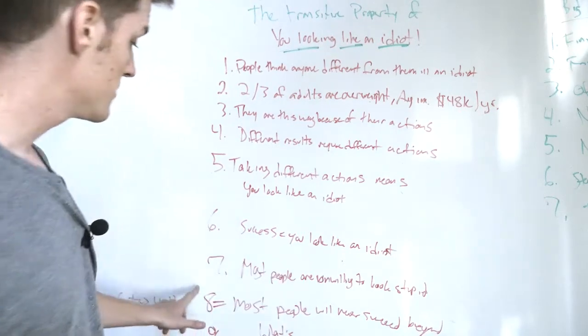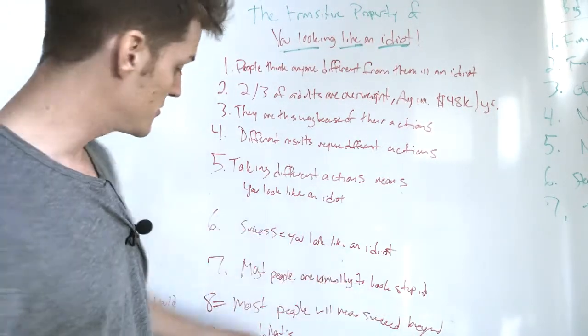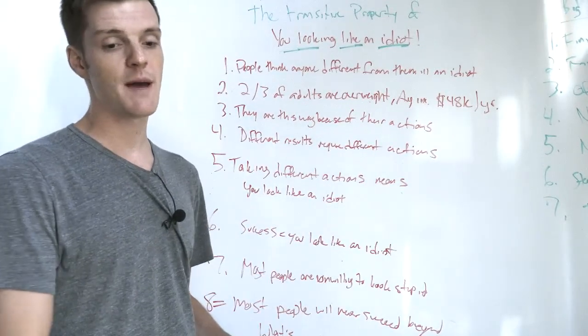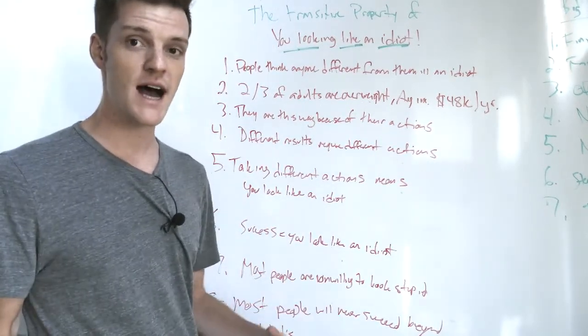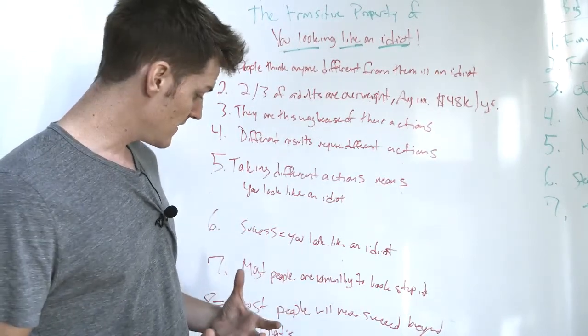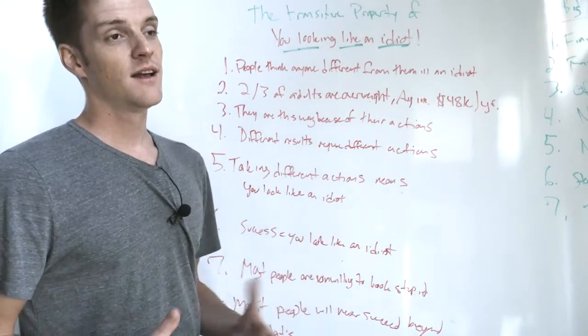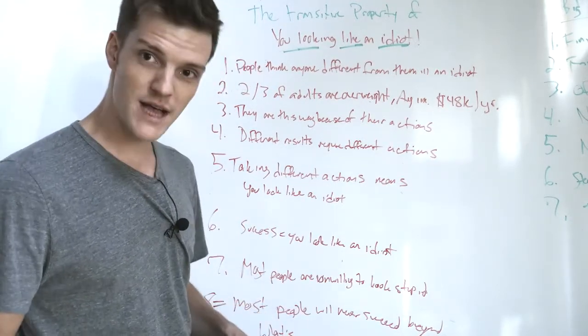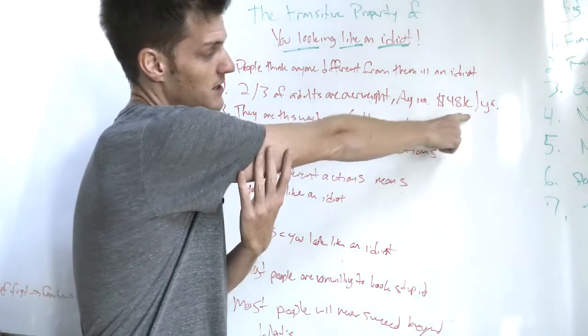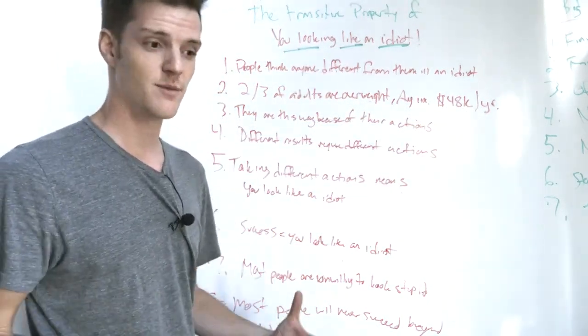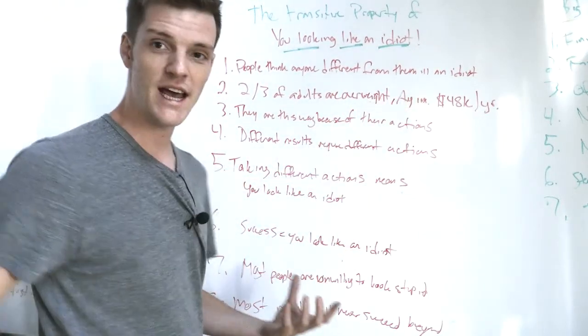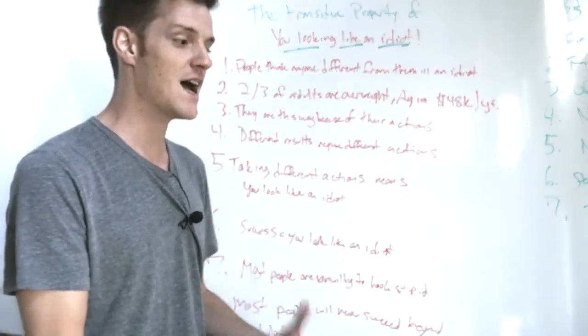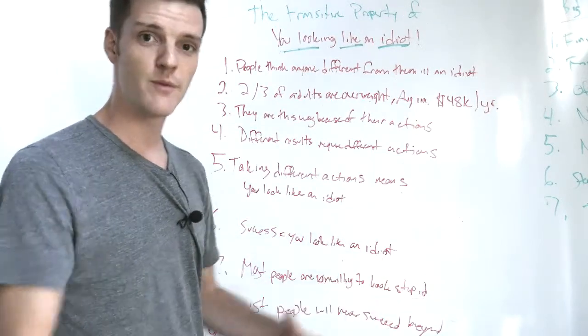Number eight, if most people are unwilling to look stupid, that means that most people will never succeed beyond what's average. If we're unwilling to step outside the in-group values, to step outside the tribe and stand alone, then we will never succeed. Because if we want to move beyond average, that requires taking actions that are not average. In order to get something that we've never had before, that nobody else has, we have to do things that nobody else will do.